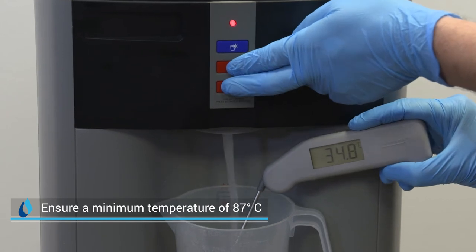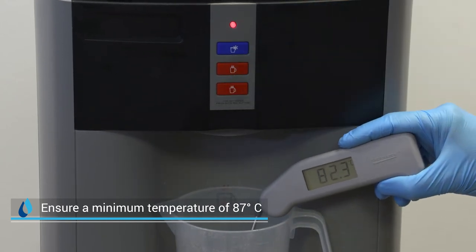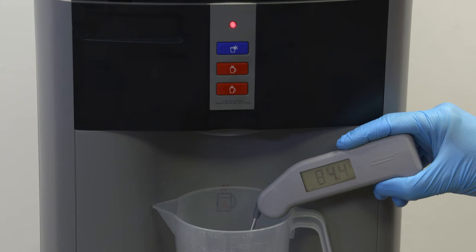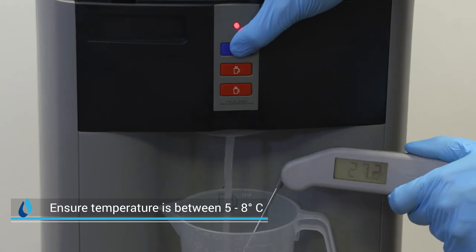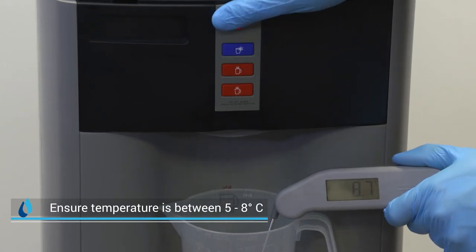To test the hot water temperature, use a thermometer to test the temperature. It should be approximately 87 degrees centigrade. Once the compressor has turned off, the cold water temperature is ready to be tested.